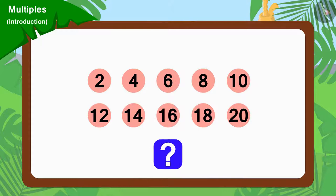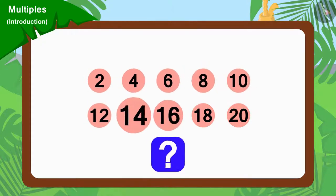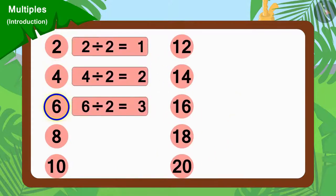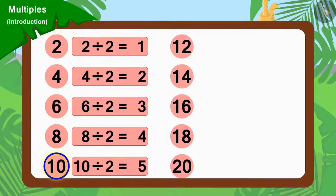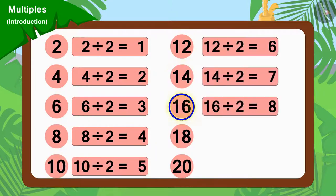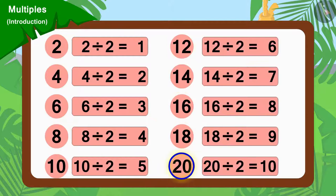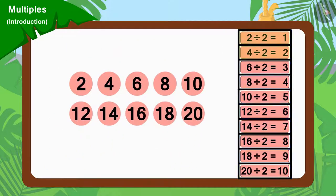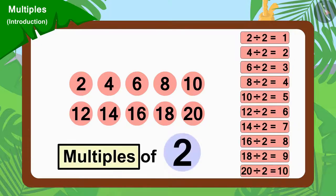Children, do you see anything special in these numbers? Yes, we can divide all these numbers by 2. Numbers that can be divided by 2 are multiples of 2. In this way, 2, 4, 6, 8, etc. are multiples of 2.